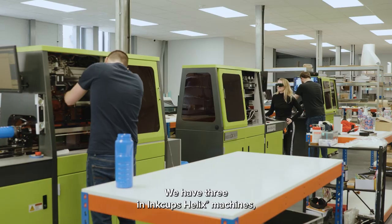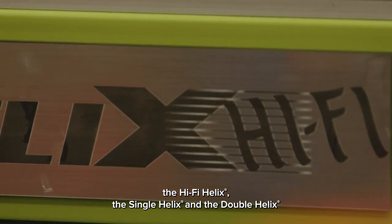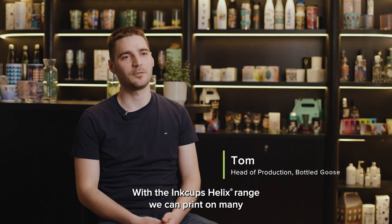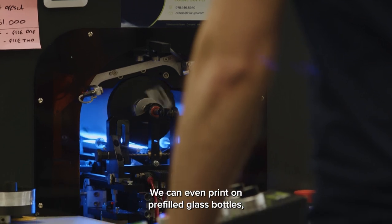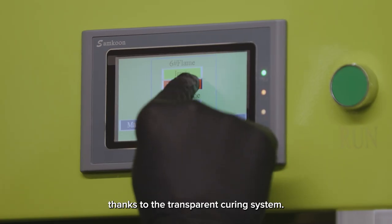We have three InkUps Helix machines: the HiFi Helix, the Single Helix, and the Double Helix. With InkUps Helix range, we can print on many cylindrical and tapered products. We can even print on pre-filled glass bottles, thanks to the transparent curing system.